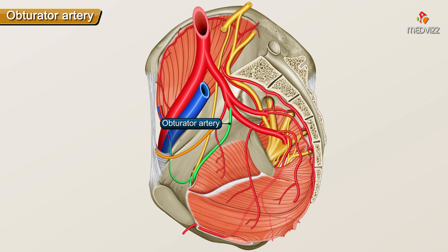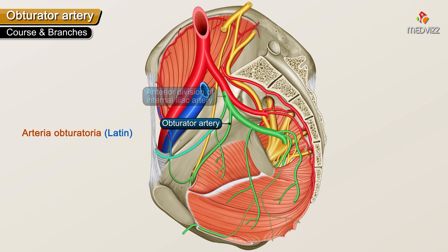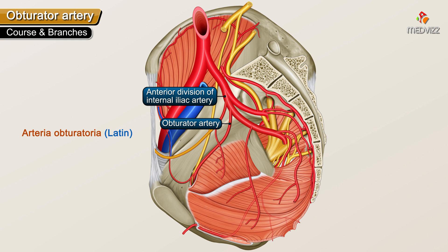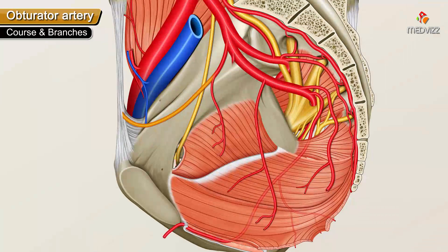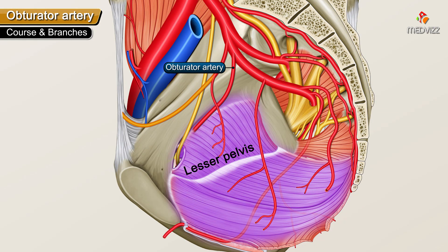Obturator artery. The obturator artery, in Latin arteria obturatoria, is a branch of the anterior division of the internal iliac artery. The obturator artery runs along the lateral wall of the lesser pelvis and leaves the pelvic cavity via the obturator canal.